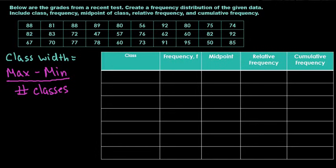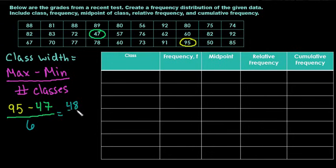Okay, so for this one our maximum value is 95. That's our absolutely highest value. Our minimum value is 47. So we would plug these values into our formula, 95 minus 47. And for this one I am going to use six classes. So when we do this, 95 minus 47 gives us 48. 48 divided by 6 ends up giving us 8.